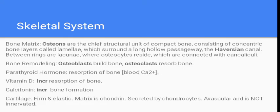The bone matrix — the osteons are the chief functional unit. There are different bone layers that surround a long hollow passageway called the Haversian Canal. For bone remodeling: osteoblast builds bone — B for build — and osteoclast reabsorbs bone. Parathyroid hormone and Vitamin D increase the resorption of bone, while calcitonin increases bone formation.